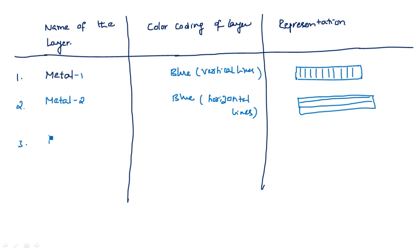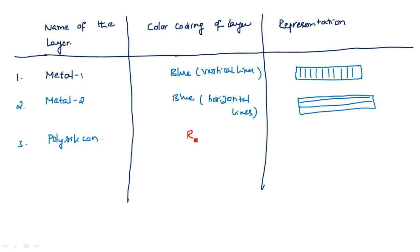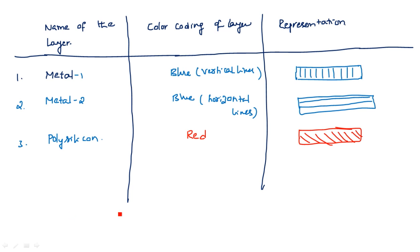The third layer is polysilicon. Polysilicon is represented by red color. In the layout, polysilicon is shown with a red backslash pattern — the backslash lines represent the polysilicon layer.